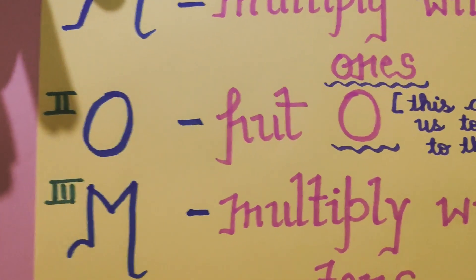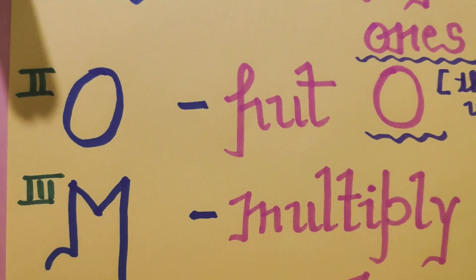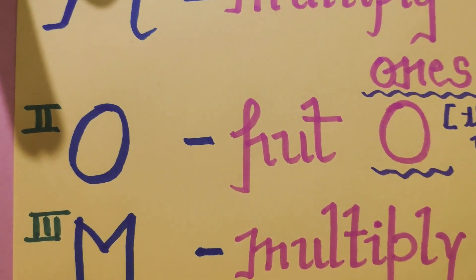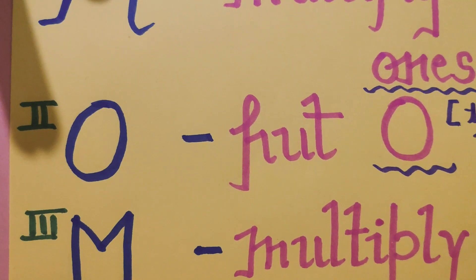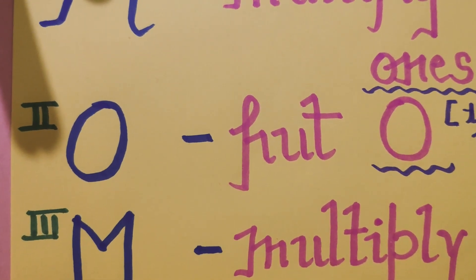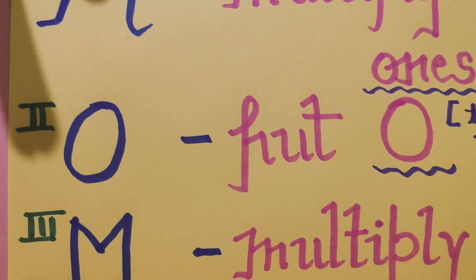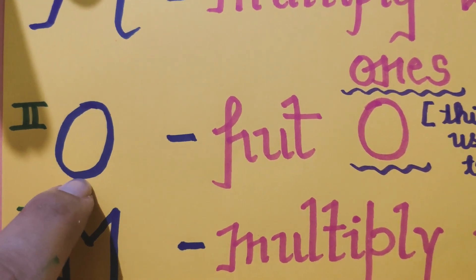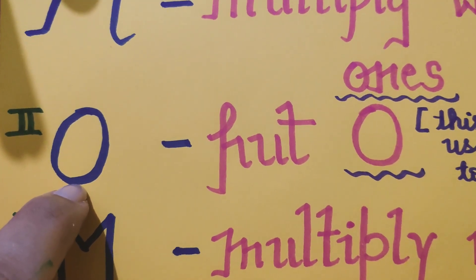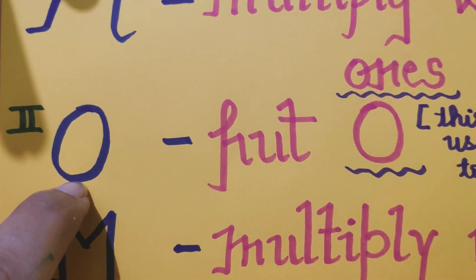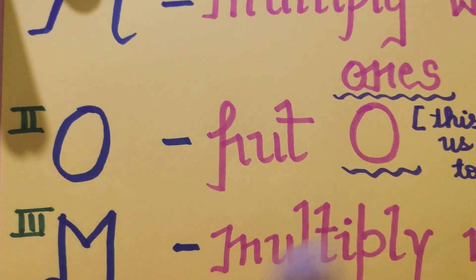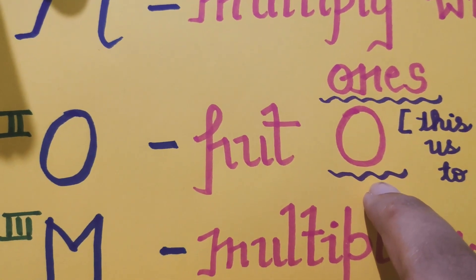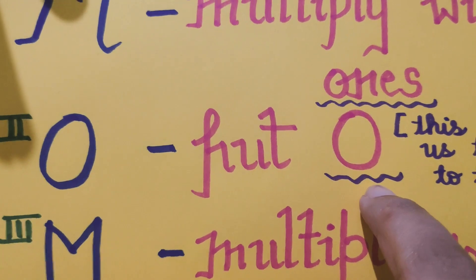Now let's go to the second step. The second step is: put 0. It's a very simple step. This O can be represented as 0, so you have to put this O or 0 in the second step.